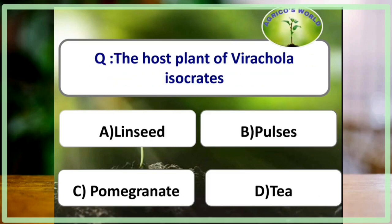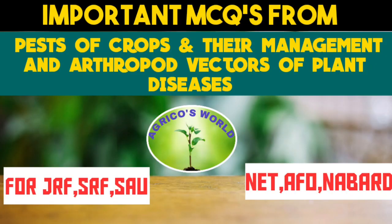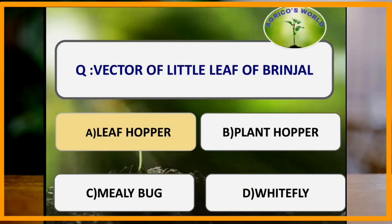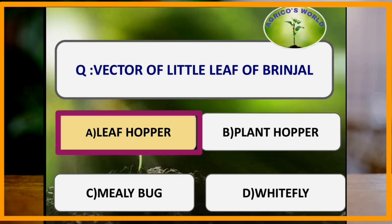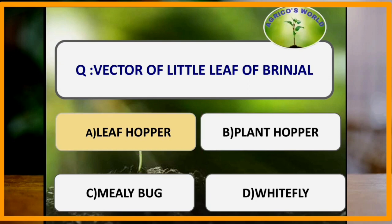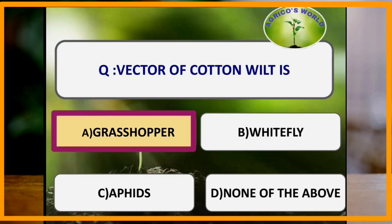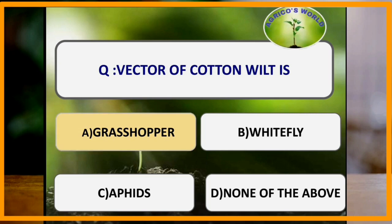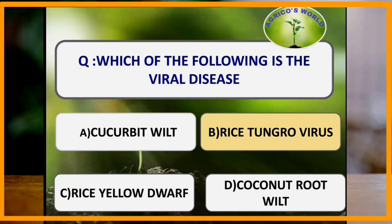Now let's discuss important questions related to arthropod vectors of plant diseases asked in competitive exams. The vector of little leaf of brinjal is leafhopper. The vector of cotton wilt is grasshopper — Melanoplus differentialis is the vector of cotton wilt. Rice tungro virus is a viral disease.